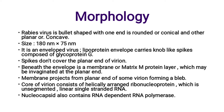The spikes are composed of glycoprotein G and do not cover the planar end of the virion. Beneath the envelope is a membrane known as the matrix M protein layer, which may be invaginated at the planar end. The membrane projects from the planar end of some virions forming a bleb-like structure.